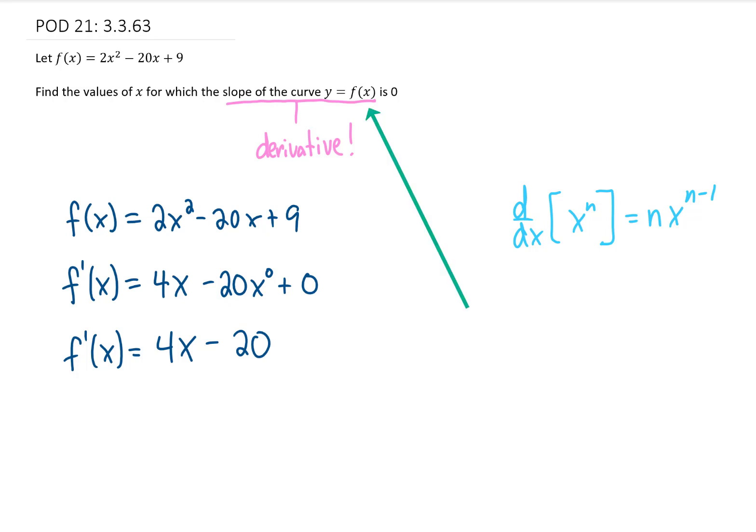But we're not quite finished yet because we're trying to find the values for x for which the slope equals 0. We found a function for the slope right here—that's what a derivative is. If we want to know where this equals 0, then we need to replace the slope or the derivative with a 0. This gives us an equation that we can solve for x.